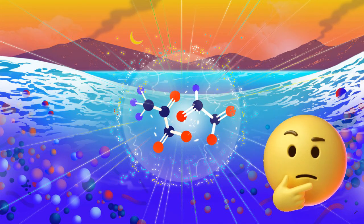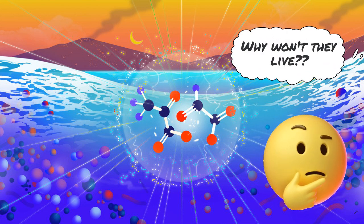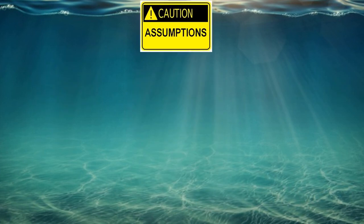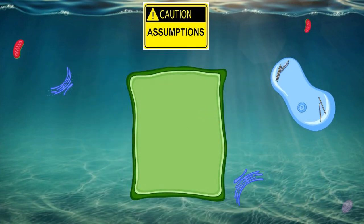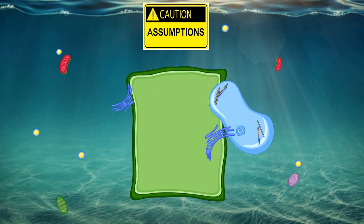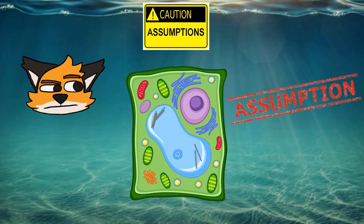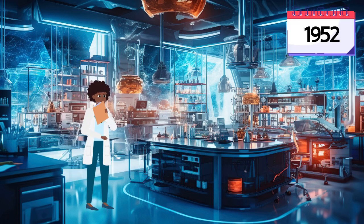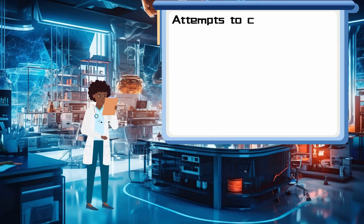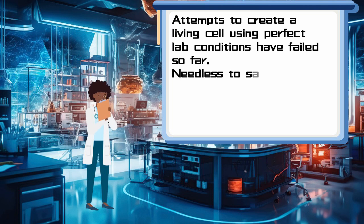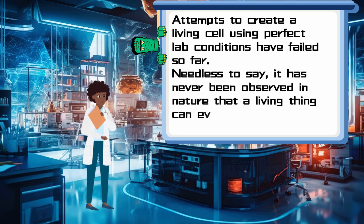The attempts to explain abiogenesis rely purely on chemistry and physics. However, in reality, molecules and chemistry don't care about life. Molecules have not been observed to be evolving towards life in even the simplest of forms. The main assumption by scientists in explaining abiogenesis is the possibility of matter to self-assemble and self-replicate. Given a long time horizon, this assumption tries to eliminate any source for the non-materialistic information within life and biology. However, even after so many years of using the latest advanced technology, using only chemistry and physics has not been successful. Attempts to create a living cell using perfect lab conditions have failed so far. Needless to say, it has never been observed in nature that a living thing can evolve from non-living matter.